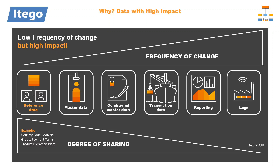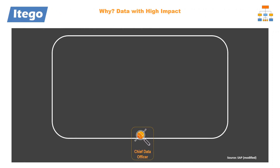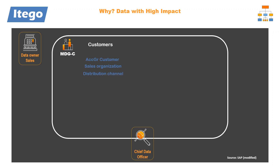We are now going to take a look at the dependencies between master data objects and their corresponding reference data objects by the example of a CDO and his data owners. A CDO usually has several data owners, for example in sales. Master data in sales is usually managed in MDG-C, where you need to take care of your customers, and to properly manage your customers, you need to take care of some linked reference data objects. This also applies for data owners in finance who use MDG-F to maintain objects like accounts, cost centers, etc., but for maintaining these objects, there are even more reference data objects to be maintained as a foundation.